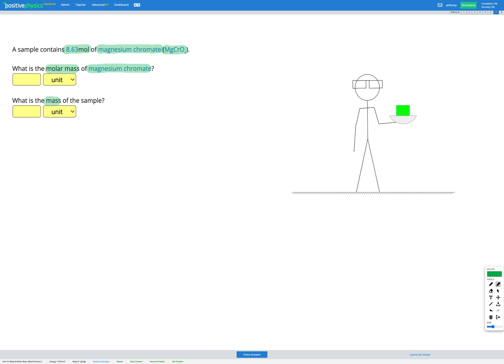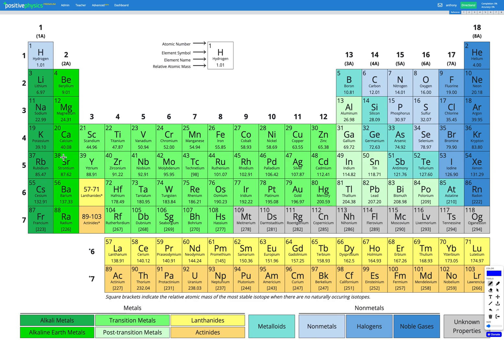So let's go to our periodic table, and we've got magnesium here, we've got chromium here, and we've got oxygen here. And their relative atomic mass is the number at the bottom of the square. So we've got 24.31 for magnesium, 52.00 for chromium, and 16.00 for oxygen.